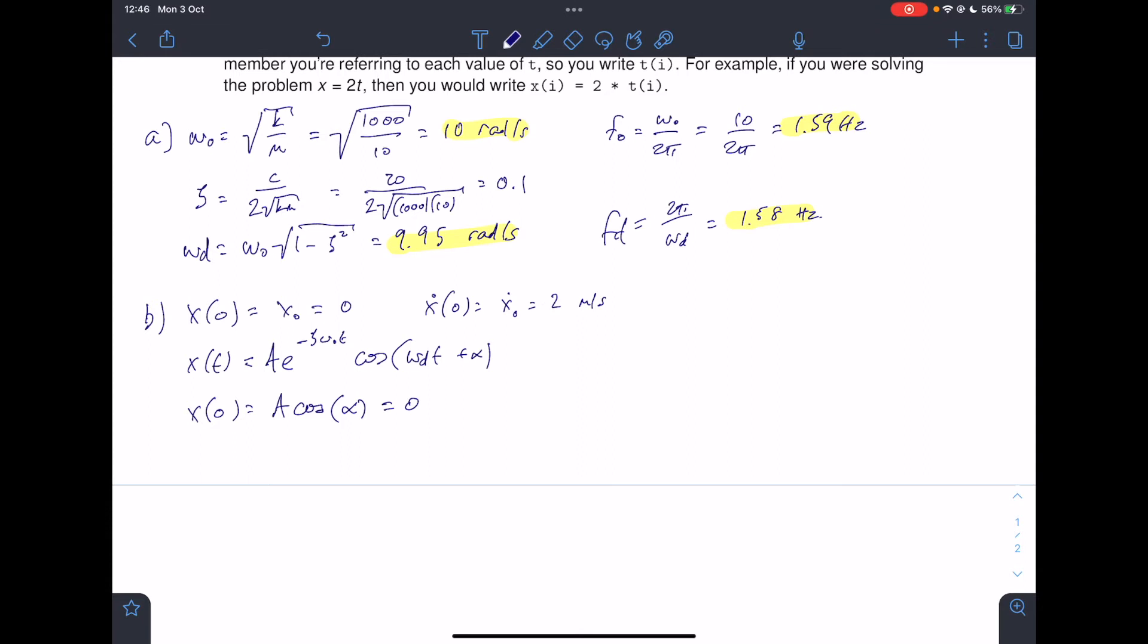Now the only way for that to equal 0 is if A is 0 or if cosine of alpha is 0. Can A be 0? A is the amplitude. If it's 0 amplitude, then it's not oscillating, and that's not true. So A can't be 0, so cosine of alpha must be 0. What value of alpha does cosine have to take for it to be 0? Cosine inverse of 0 comes out to be pi by 2. So alpha is pi by 2.